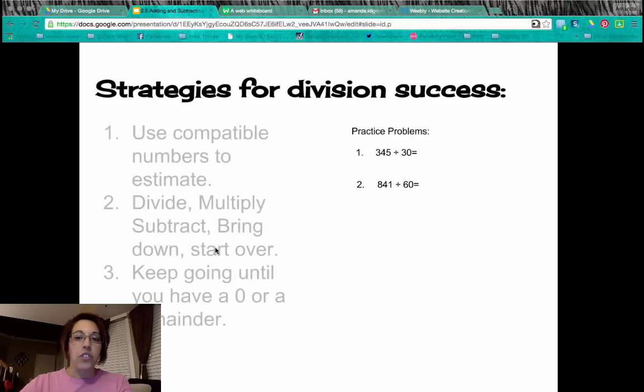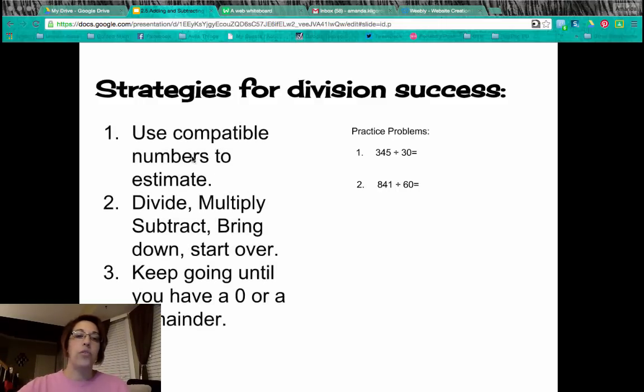So strategies for division success, we have used compatible numbers to estimate. Then we're going to follow our divide, multiply, subtract, bring down, start over method, and then keep going until we have a zero or we have a remainder.